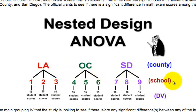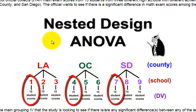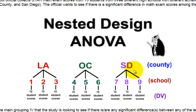That's the nesting part. When this ANOVA gets run, it's going to be comparing the performance from the LA high-performing to the OC high-performing to the San Diego high-performing, and the medium-performing schools together, and the low-performing schools together. It just wouldn't make any sense to compare all three schools within a county against each other, because we already know there's a significant difference between them — one's high, one's medium, one's low. So that's the nested part of this ANOVA.